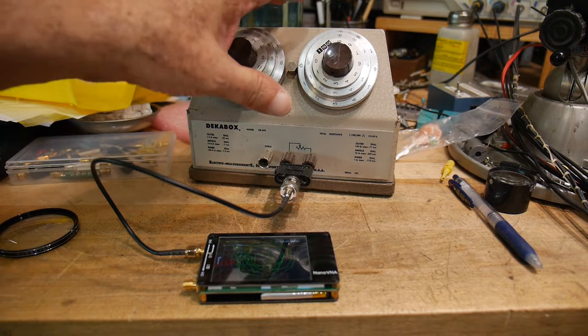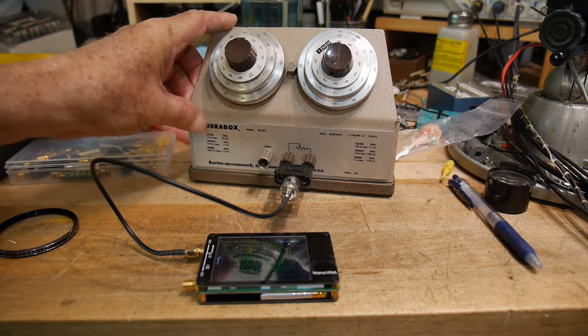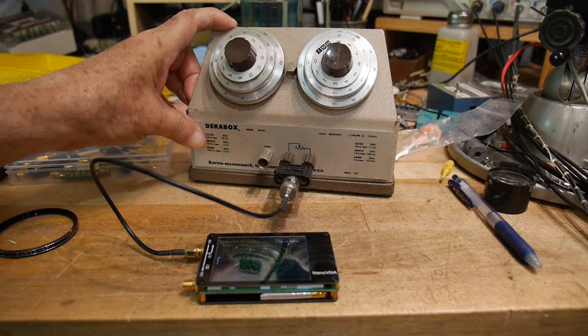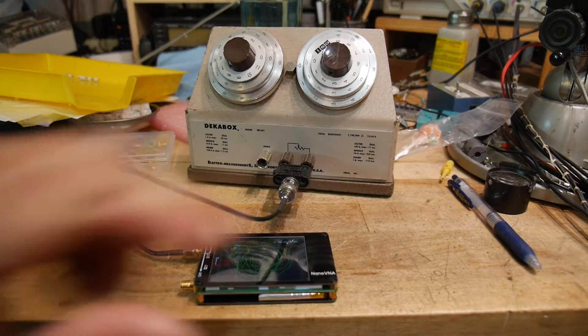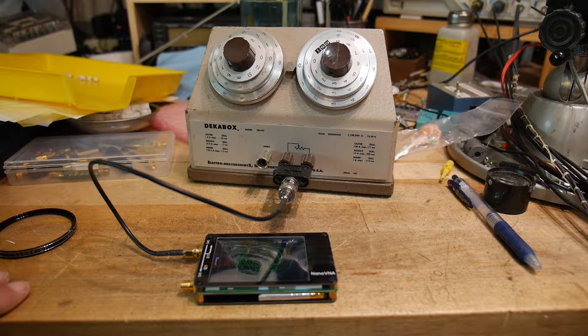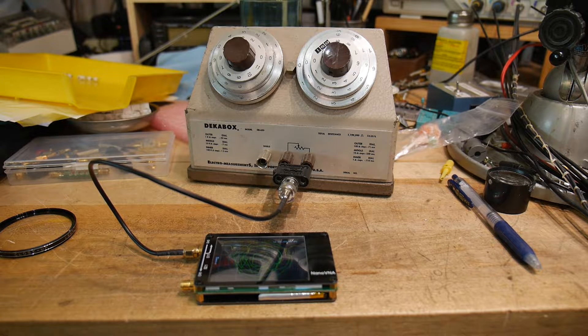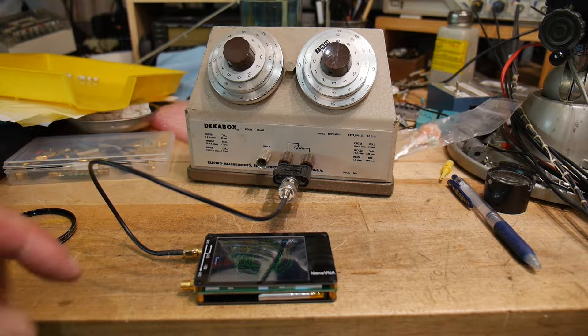And we're going to be using a decade box. This decade box is calibrated, it gives its accuracy to 0.05% so that should be good enough for us. And so let's get this thing set up.